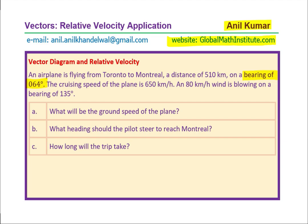Let me sketch a rough diagram here to indicate what a bearing angle is. We are saying an airplane is flying from Toronto to Montreal on a bearing of 064. If this is Toronto going to Montreal, the bearing is the clockwise angle from the north — that is 64 degrees. We always write the bearing angle in three digits, so you will find 064. It is the angle from the north, measured clockwise.